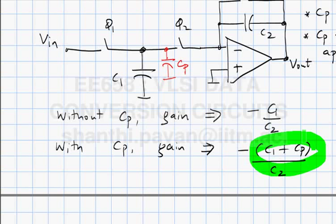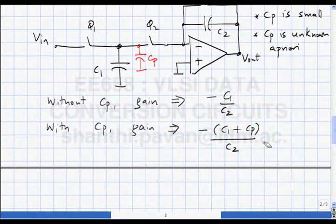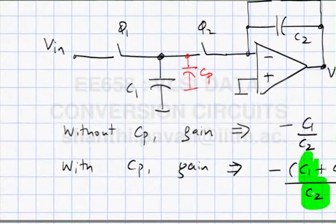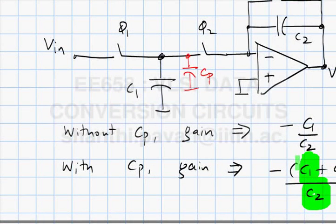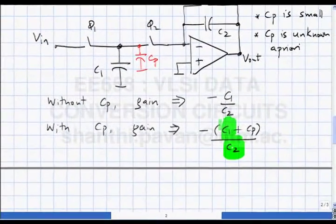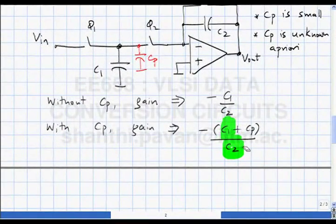With CP there is first a gain error. Then, this gain error does not stay constant over process and temperature. C1 and C2, being made of the same kind, both vary by the same percentage, keeping their ratio fixed. However, CP will likely not vary the same way with process and temperature as C1 or C2 — that is therefore a problem.